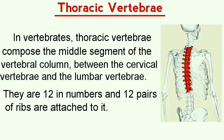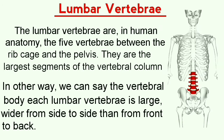The lumbar vertebrae are, in human anatomy, the five vertebrae between the rib cage and the pelvis. They are the largest segment of the vertebral column. Each lumbar vertebra is large — wider from side to side than from front to back — and each lumbar vertebra is bigger than the ones above it, as seen in the figure below.